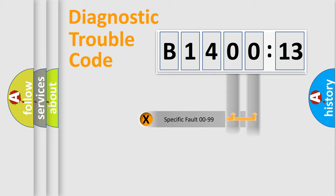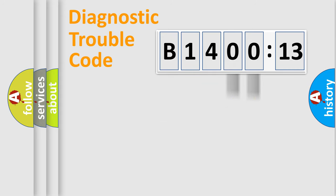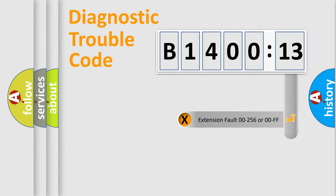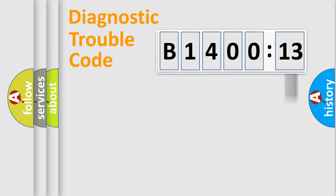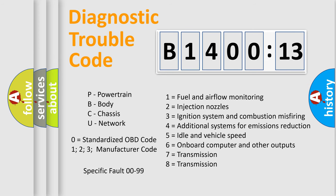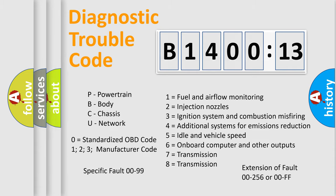Only the last two characters define the specific fault of the group. The add-on to the error code serves to specify the status in more detail — for example, a short to the ground. Let's not forget that such a division is valid only if the second character code is expressed by the number zero.